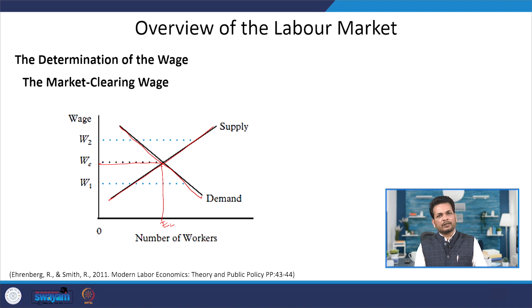Let us understand what happens if the wage rate is not equal to the market clearing wage rate — when it is W2 or W1, above or below the market clearing wage. Suppose the market wage rate is set at W1. At this low wage, demand exceeds supply. Employers will be competing for fewer workers and a shortage of workers would exist.